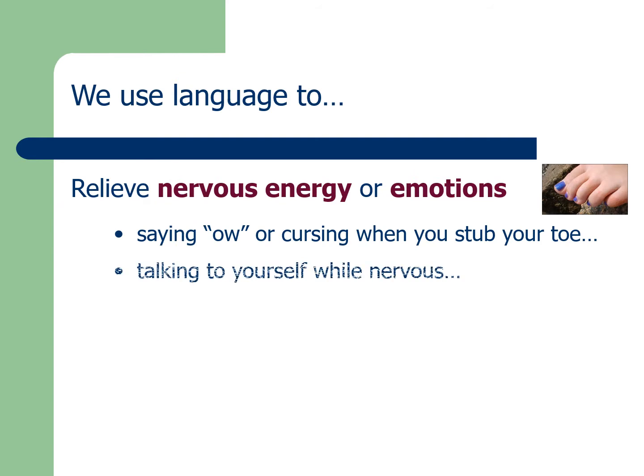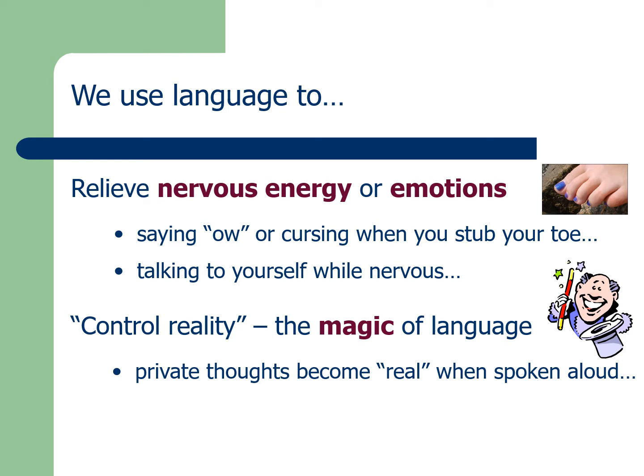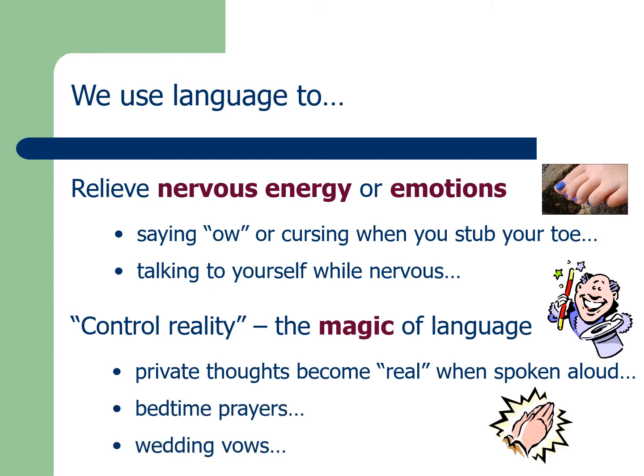We use language for lots of different things. We use it to relieve nervous energy, like when you say 'ouch' when you stub your toe, even though nobody else is in the room, so you're not really communicating with anyone. We also use it to control reality. One example would be wedding vows — prior to saying 'I do' you're single, once you say 'I do' you are married, so that is actually making a commitment by using language. Another example is being a witness on the witness stand — prior to swearing on the Bible whatever you say is of your own volition, but after that you are committing perjury if you lie.